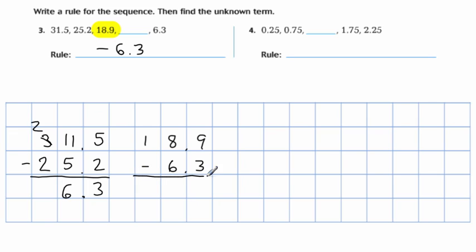So 18.9 minus 6.3. 9 minus 3 is 6. 8 minus 6 is 2. 1 minus 0 is 1. Don't forget your decimal place. So the missing number here, applying the rule, is 12.6.